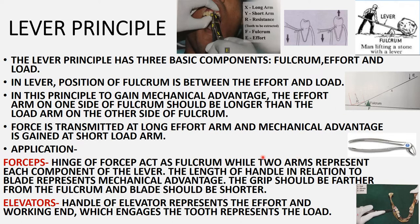In the application of the lever principle with forceps: the forceps has handles, a hinge, and beaks. The hinge acts as the fulcrum, the handle acts as the effort arm, and the beaks act as the load arm. Since the handle is longer than the beak arm, forces applied at the handle produce mechanical advantage at the beaks, enabling tooth extraction.